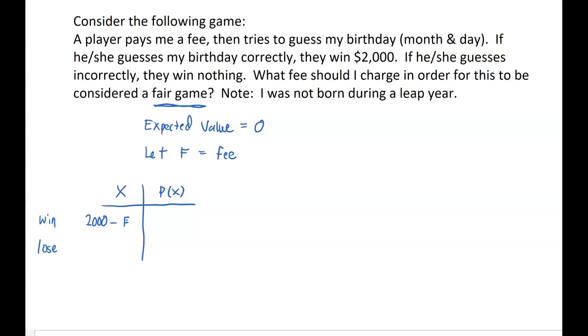Well, they're gonna win the $2,000 prize minus whatever fee they paid to play the game. We don't refund the fee. So in other words, if somebody pays $10 to play this game and they win, they're gonna come out $1,990 ahead. They're gonna get a check for $2,000 or $2,000 cash, but they don't get a refund of the $10 they paid. So the amount of the win is actually going to be the $2,000 prize minus whatever fee was paid.